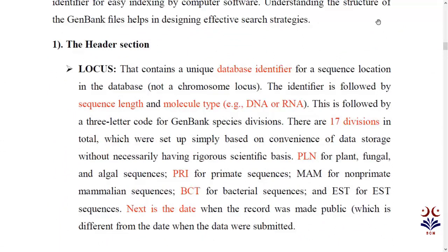The header section starts with Locus. Locus is the database identifier — it tells us where our sequence is in the database. Then the sequence length is given. After that, we have the molecular type — whether the sequence retrieved is DNA or RNA. In addition, there are 17 divisions based on species. For example, if we have a plant, the division will be PLN; for primates it will be PRI.